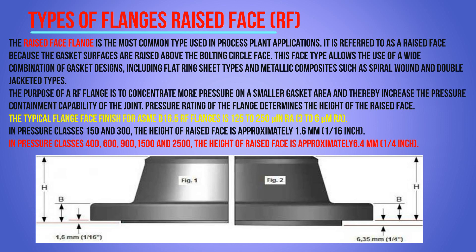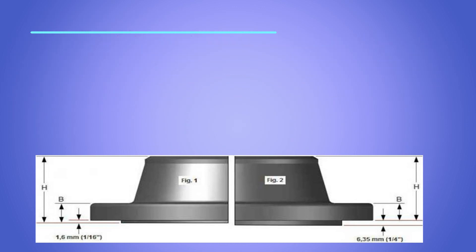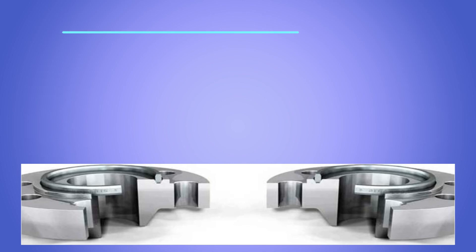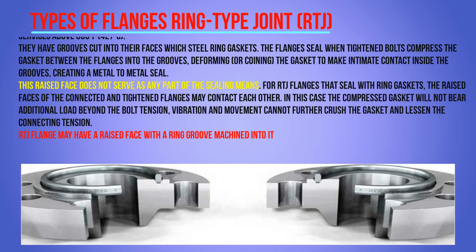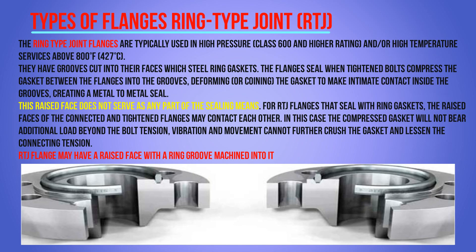In pressure ratings 400, 600, 900, 1500, and 2500, the height of the raised face is approximately 6.4 mm. Ring type joint flanges are typically used in higher pressure — class 600 and higher — and higher temperature service above 800°F. They have grooves cut into their face to accommodate a steel ring gasket.